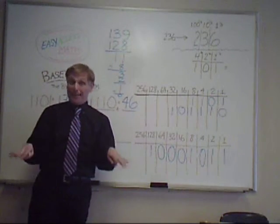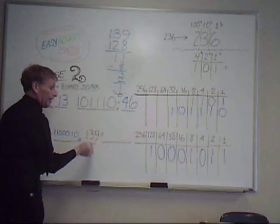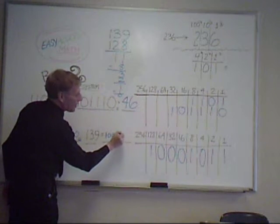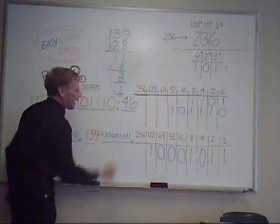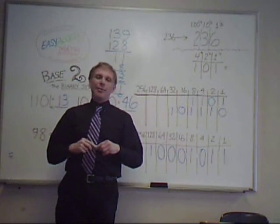I used up all my numbers. Remember, you keep going until you get 0. And, so, 139 in base 10 is equal to 1, 0, 0, 0, 1, 0, 1, 1 in base 2. I hope that explains the binary system.